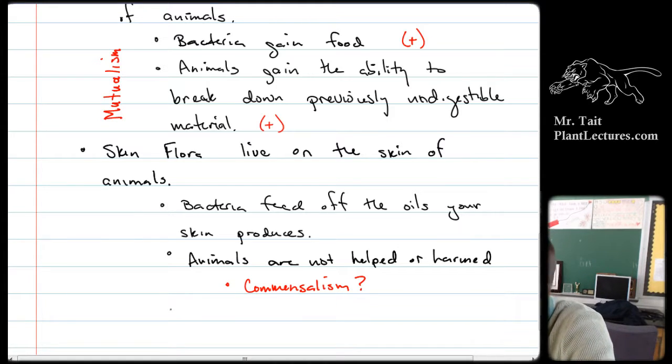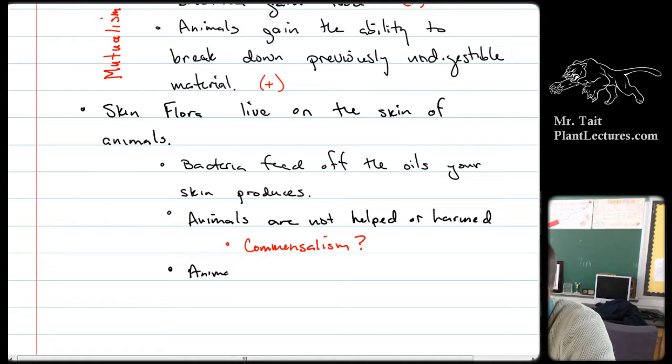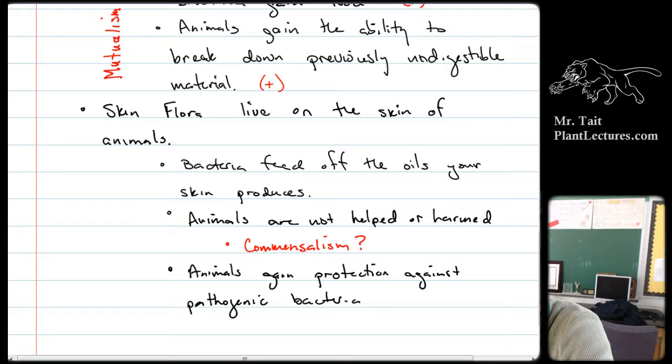But one of the things that we understand now is if you lose that skin flora, your chances of getting an infection increase dramatically. And the reason for that is because your skin flora will out-compete the other types of bacteria, the pathogenic bacteria, the types that could give you an infection. And so in that case, we recognize that animals gain protection against pathogenic bacteria, which means that this wouldn't be commensalism, it would be mutualism.